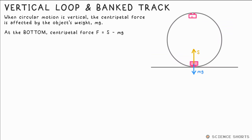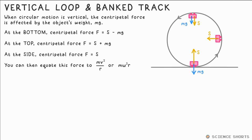At the top, both are pulling down, meaning the centripetal force equals s plus mg instead. In both cases, we usually then equate these to mv² over r. When it's at either side, weight isn't contributing to the centripetal force at all, therefore s equals mv² over r.